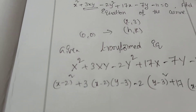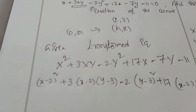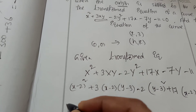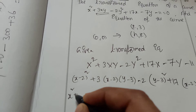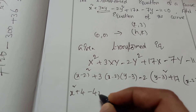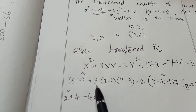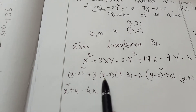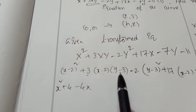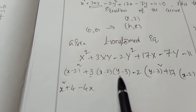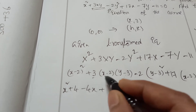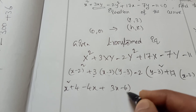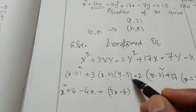Now simplify. A minus B whole square equals A square plus B square minus 2AB. So (x minus 2) squared gives x square plus 4 minus 4x. For the 3(x minus 2)(y minus 3) term, first multiply 3 with (x minus 2) to get 3x minus 6, then multiply by (y minus 3).